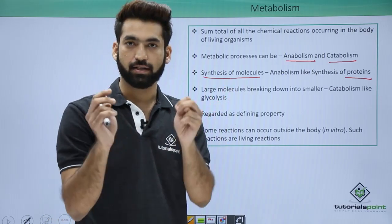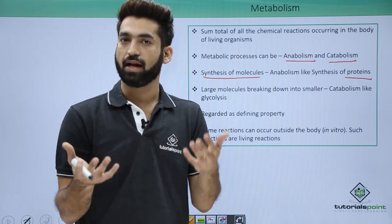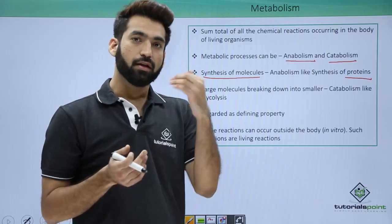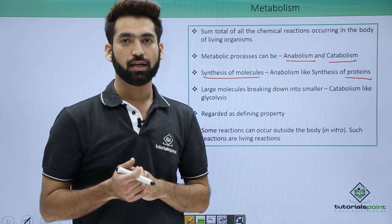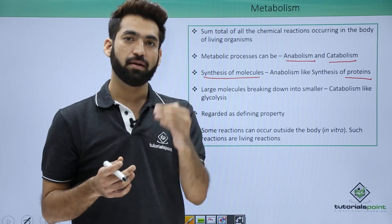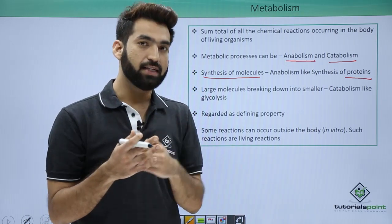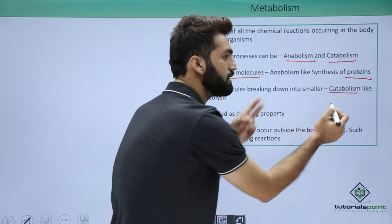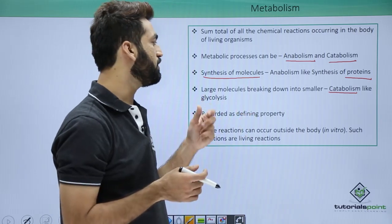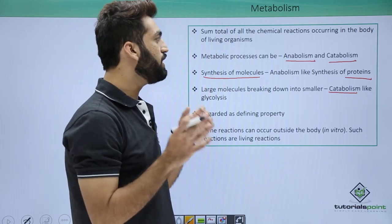Catabolism — 'kata' means cut down — is when a bigger molecule is cut down into smaller molecules. For example, glycolysis: 'glyco' is glucose, 'lysis' is breakdown. Glucose, a six-carbon sugar, breaks down into six CO₂ molecules — a one-carbon compound — and each step releases energy. This is catabolism: the reaction where something bigger breaks down into smaller molecules.